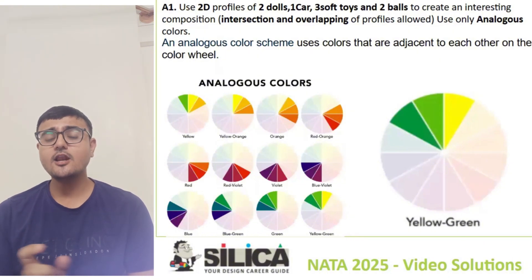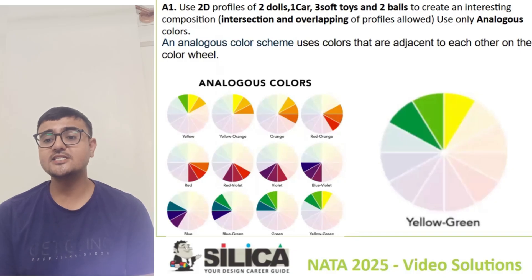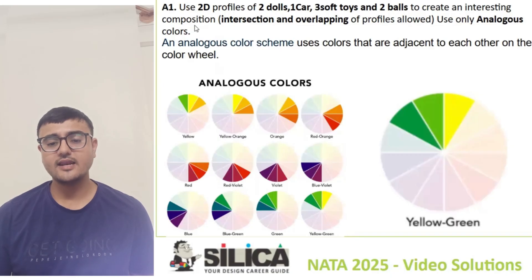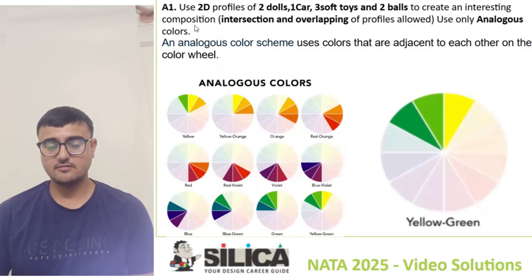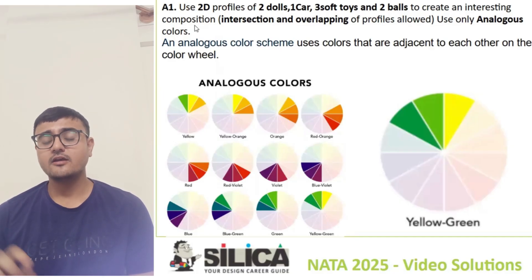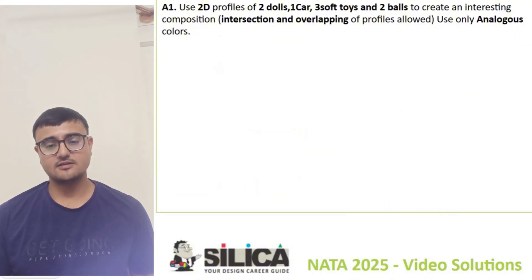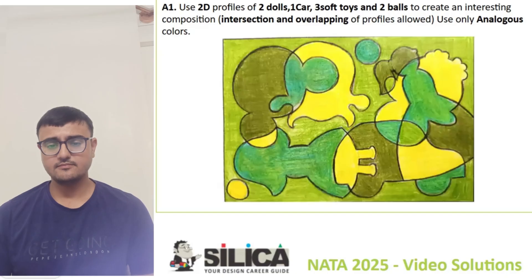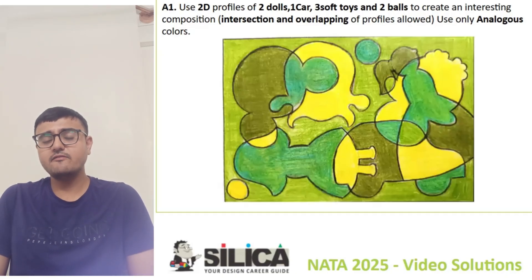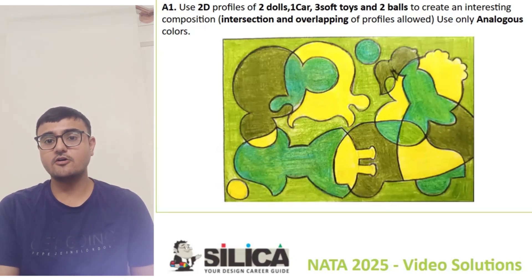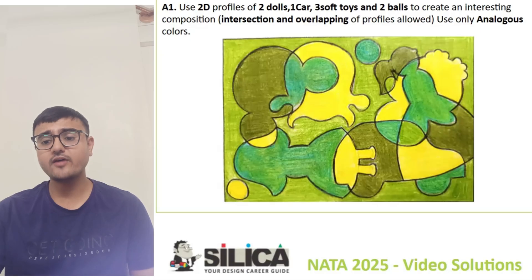The analogous color scheme uses colors that are adjacent to each other on the color wheel. Here you can see pairs of analogous colors from the color wheel. We will take yellow, yellow-green, and dark green as our analogous color scheme pair. In the composition you can see the balance of the coloring — this is about balancing the coloring in the 2D composition.